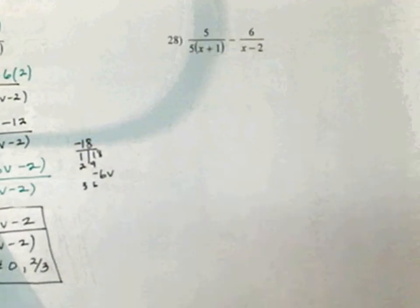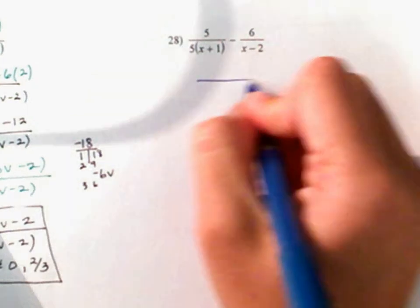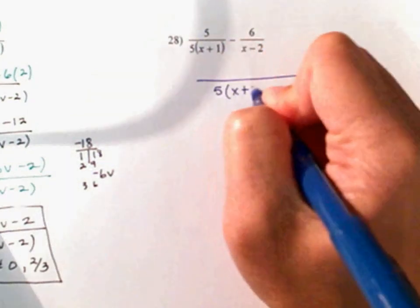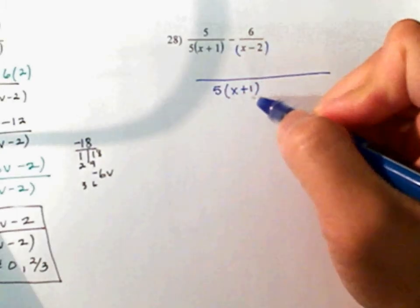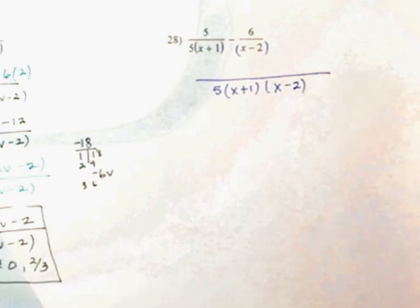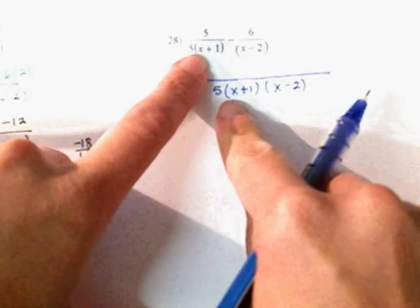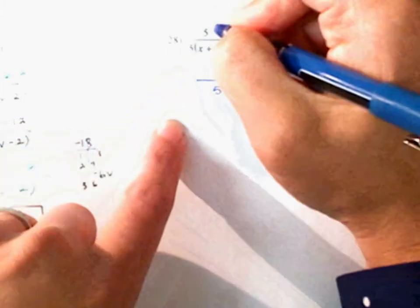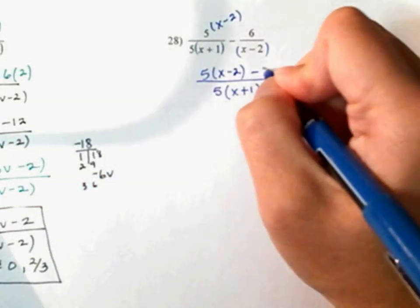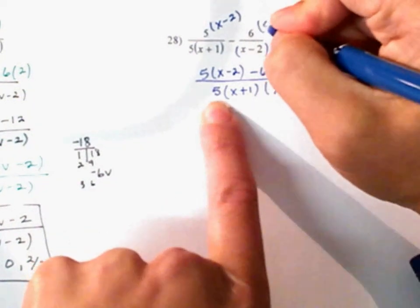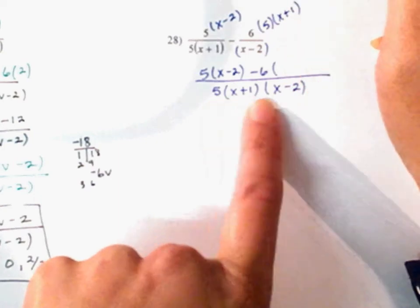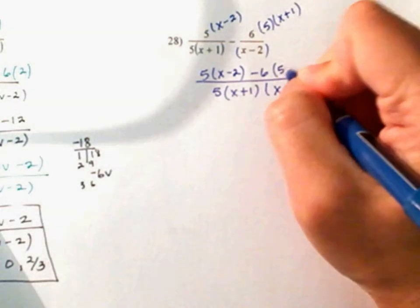28. Draw your line. Bring down my 5 and x plus 1. Look at that second set — do you have an x minus 2 in your denominator? No, so I'm going to bring that down. Now compare: I've got 5 times x plus 1. I'm missing x minus 2, so I'm going to multiply that times my numerator: 5 times x minus 2. Minus 6 — you've got x minus 2 here. What are you missing? 5 times x plus 1. You're missing all of it.